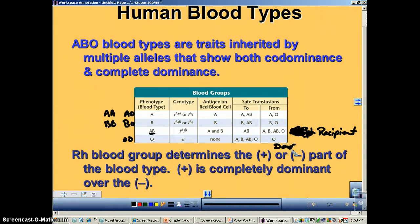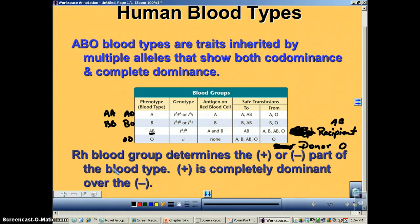Let me write that better: D-O-N-O-R. So type AB is the universal recipient, and type O is the universal donor. Now, the Rh blood group is a totally separate, different group of genes. In this one, the positive is completely dominant to the negative.